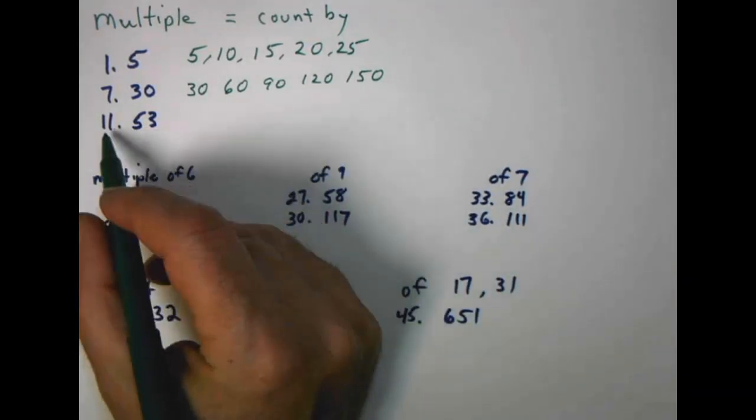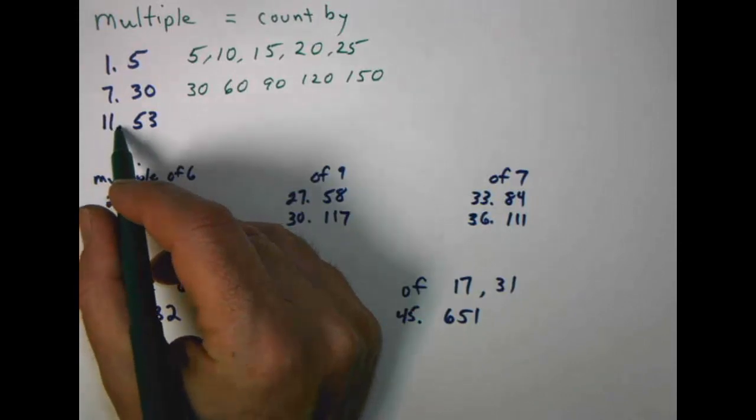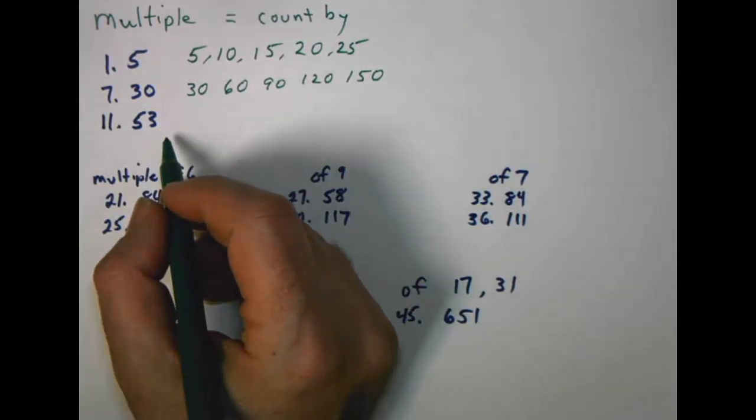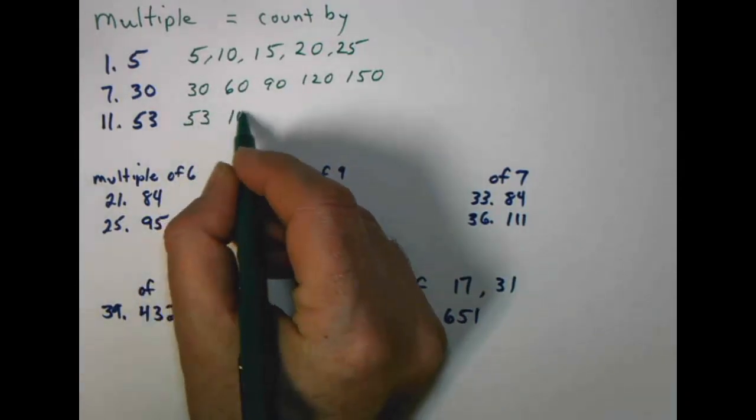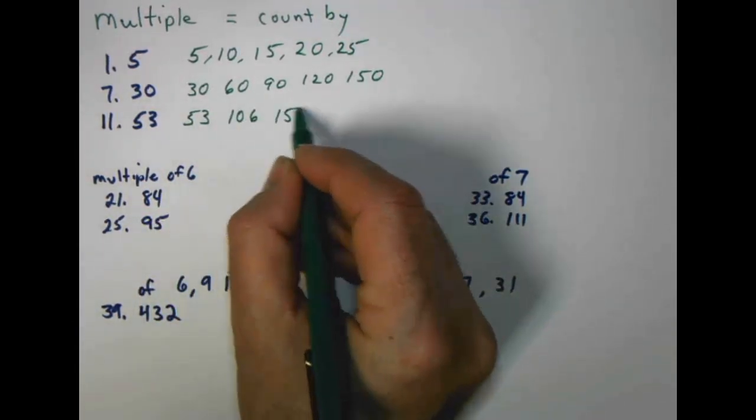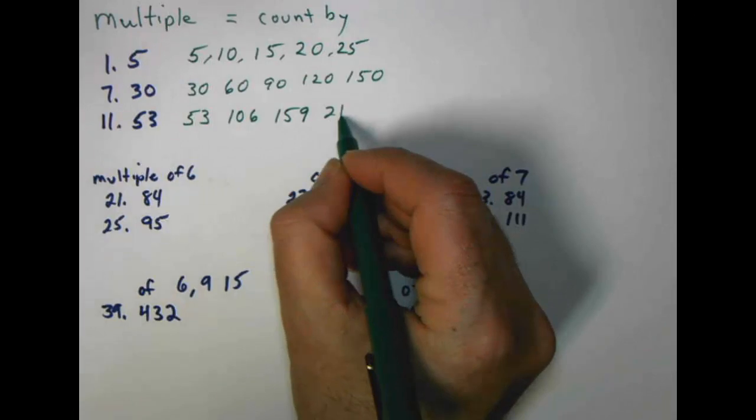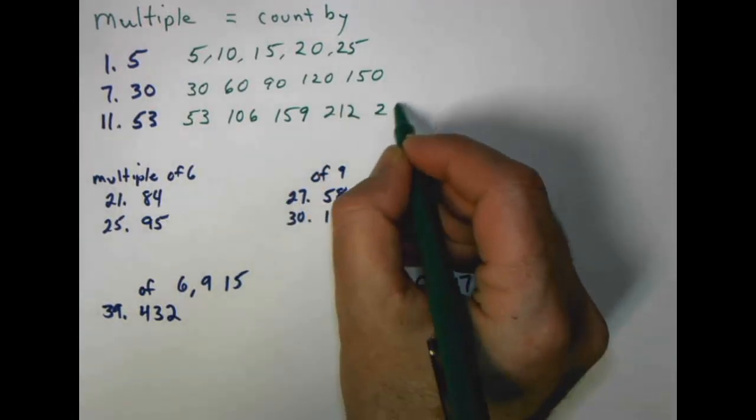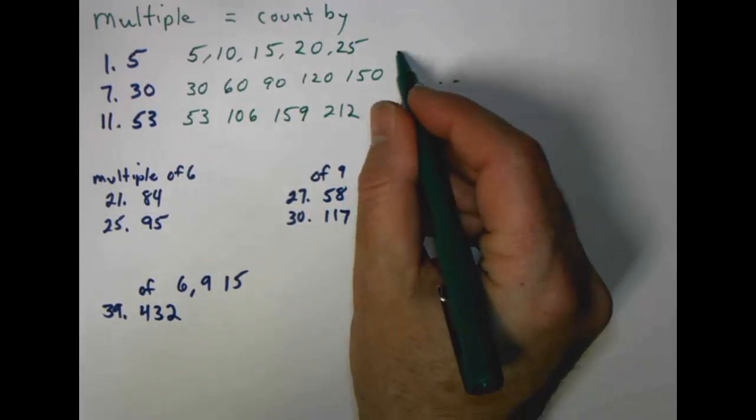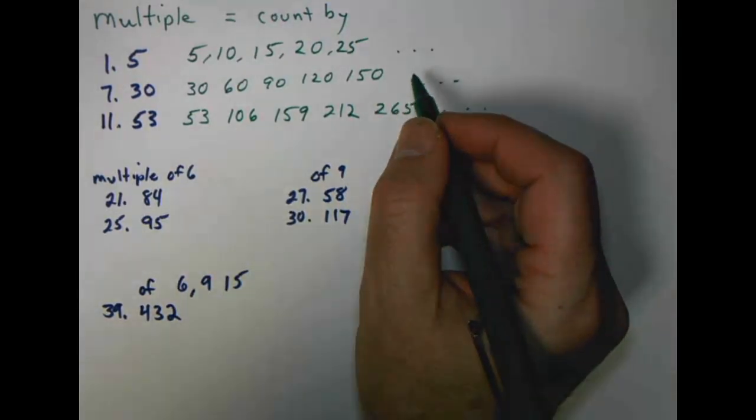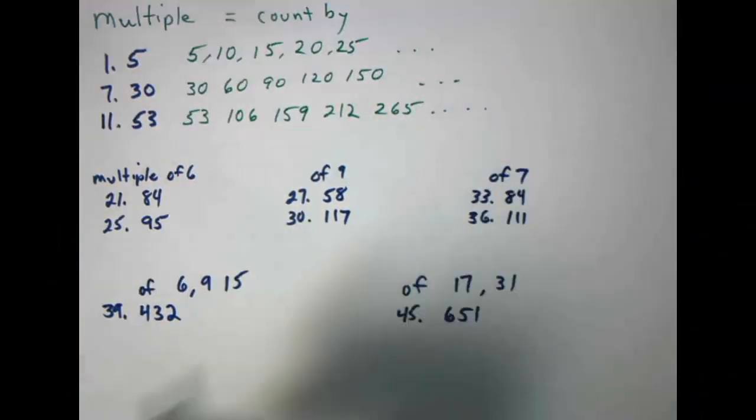For problem number eleven in the homework problems, we have fifty-three. We're just counting by fifty-threes: fifty-three, one oh six, one fifty-nine, two twelve, two sixty-five, and so on. You can keep going past that for all of these numbers, but generally they ask you to do five multiples in a group.